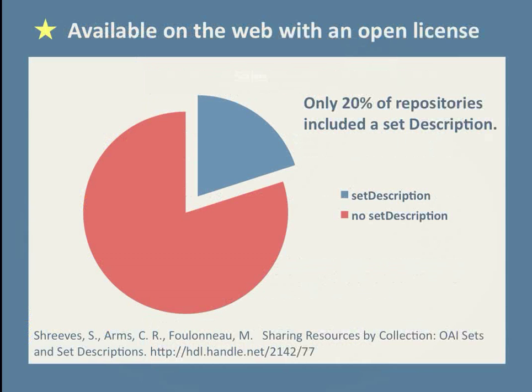For example, all of this material is available on the web, but we know very little about what the licenses are for this metadata, including metadata that we create for the IMLS DCC project itself. According to a 2006 study, only about 20% of OAI repositories included something called a set description, where a repository might specify what its license is. It's likely that an even smaller percentage indicated a license, and an even smaller percentage used an open license. This seems to be a big sticking point in moving the community towards linked data. However, I believe that IMLS DCC is well-placed to provide some leadership in this area, given our past guidance on metadata quality and other forms of aggregation.